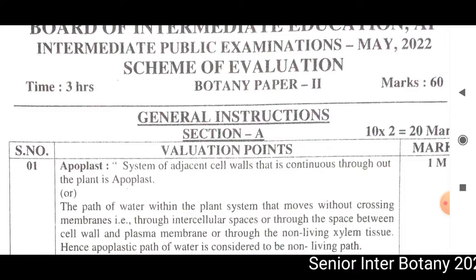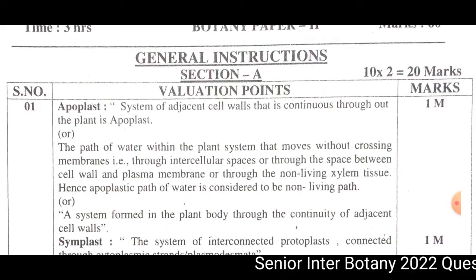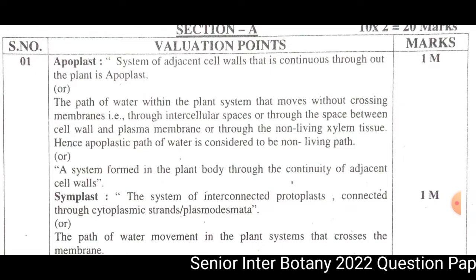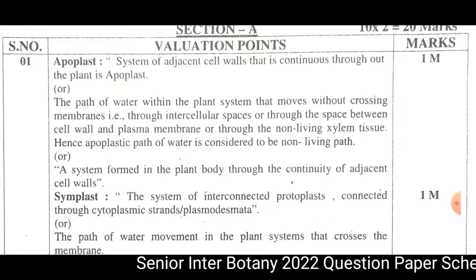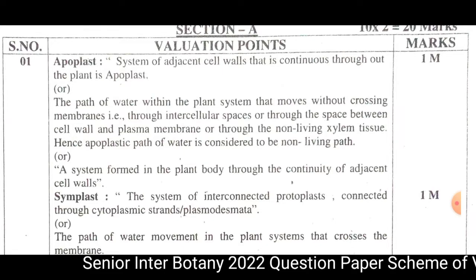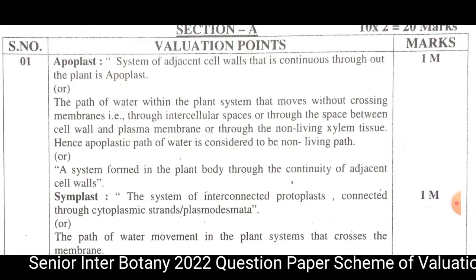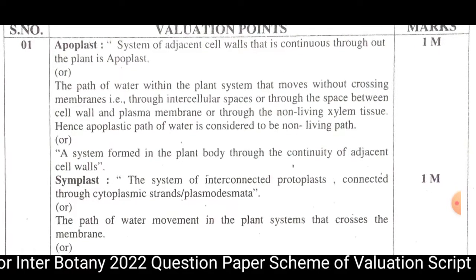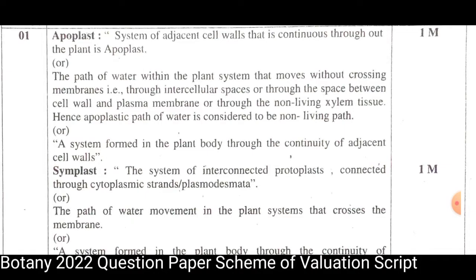The first question is a very short answer. It asks for a definition of Apoplast and Symplast. Here we have three definitions. A system of adjacent cell walls that is continuous throughout the plant is the Apoplast. Water is transferred through the cell walls and intercellular spaces.